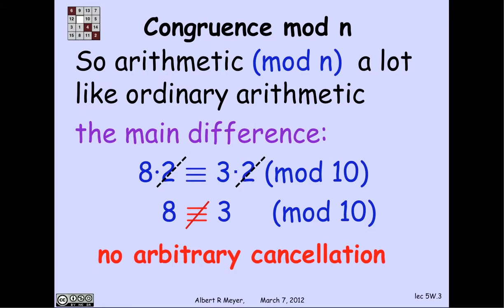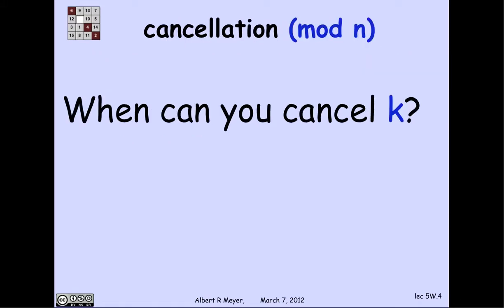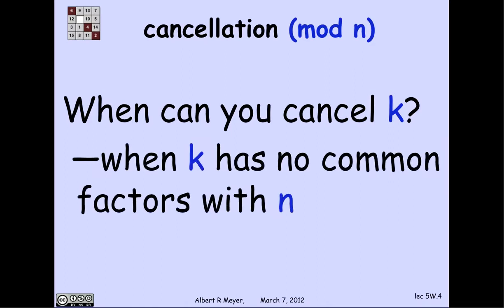So in short, you can't cancel arbitrarily. You can't cancel 2 in this case in particular. So that leads naturally to the question of when can you cancel a number? When can you cancel a number k when both sides of an inequality are multiplied by k? And the answer is simple: when k has no common factors with the modulus n.